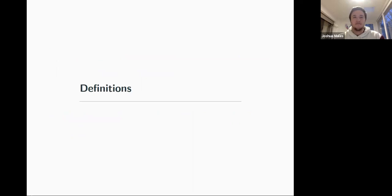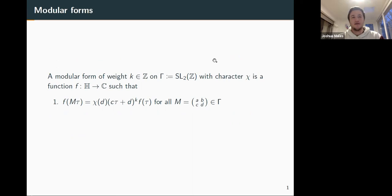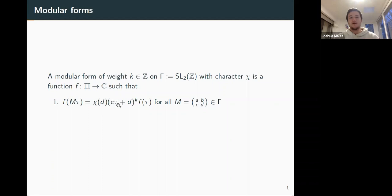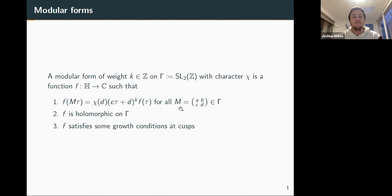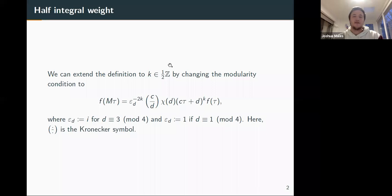We'll start with some definitions. A modular form of weight k on gamma — we say gamma is SL2Z, maybe some subgroup with some character — is just some holomorphic function that transforms in the standard way: for every matrix (a b; c d) you pull out your character and automorphic factor. It's holomorphic on the upper half plane with some growth conditions towards the cusps. We generalize to half-integral weight, adding epsilon sub d and another character on d.